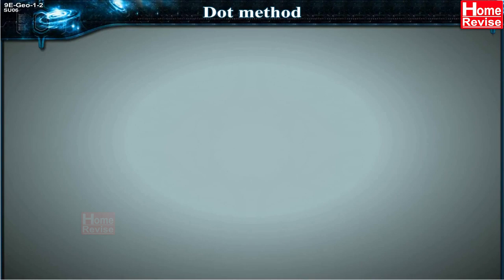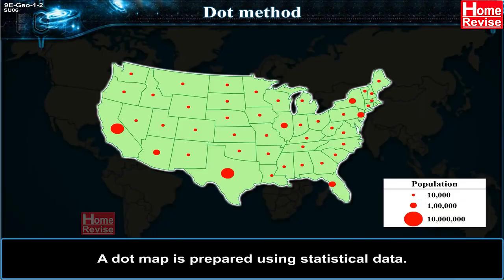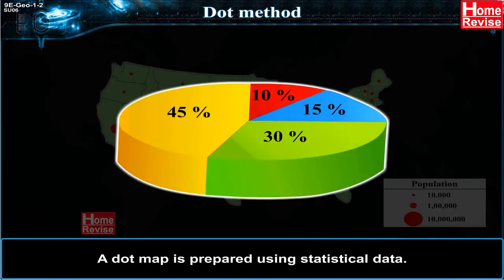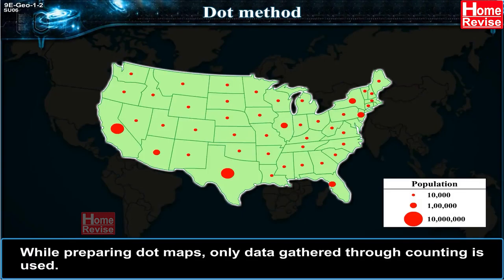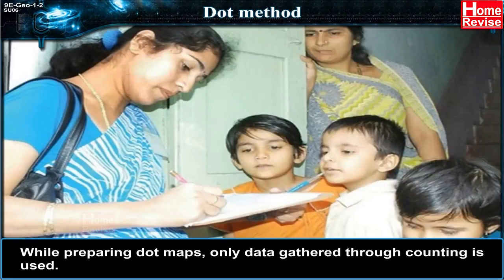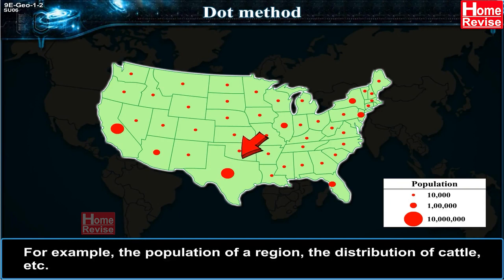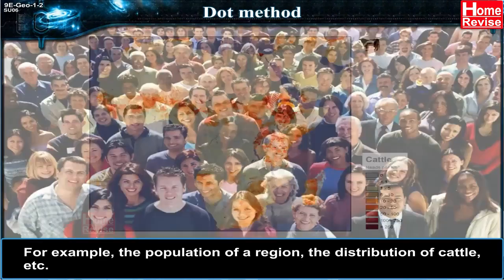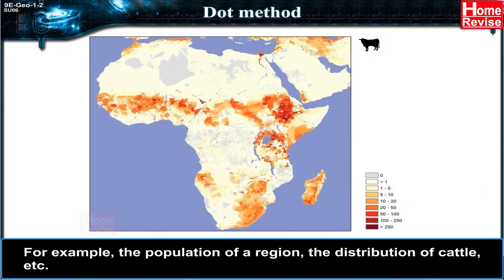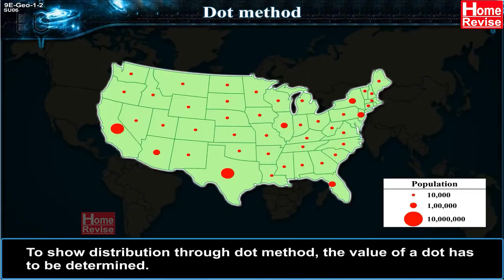The dot method: a dot map is prepared using statistical data. Only data gathered through counting is used. The dots are used to show the distribution of a variable throughout the region — for example, the population of a region or the distribution of cattle. To show distribution through the dot method, the value of a dot has to be determined.